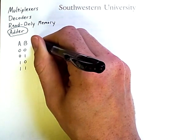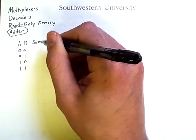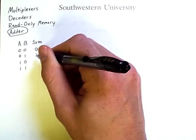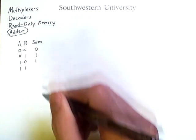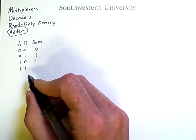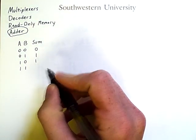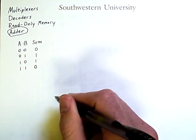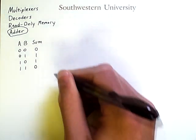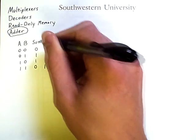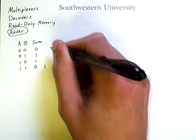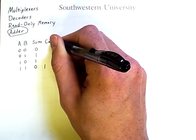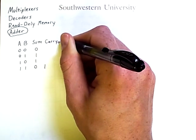So when adding a and b, we have a sum. Zero plus zero is zero. Zero plus one is one. One plus zero is one. And one plus one is two. But it's really a zero with one bit carried over. That means we don't just have a single output sum.